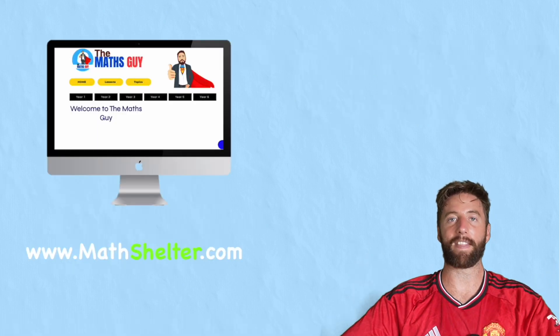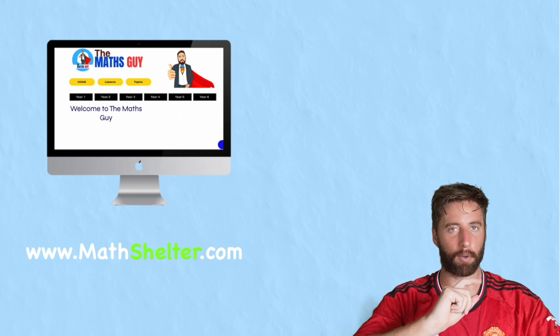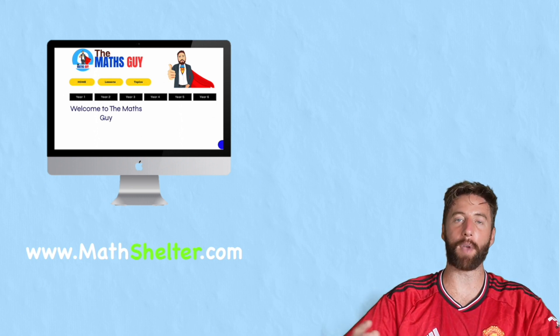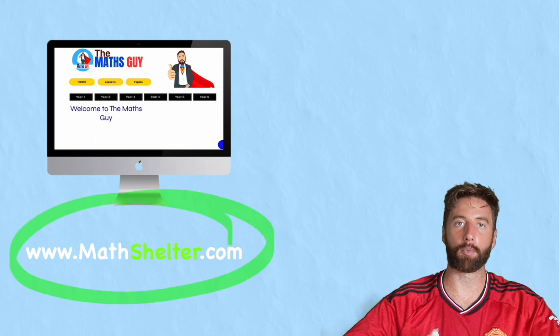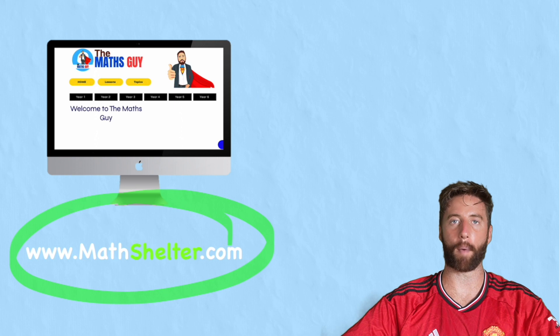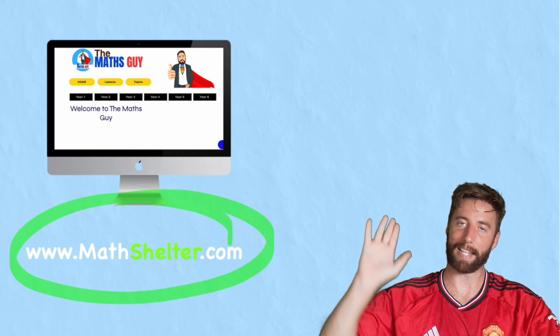And there you have it. That is how to find the area of compound shapes, including a triangle. Hopefully this video has been helpful for you. If it was, head on over to themathshelter.com, where you're going to find loads more videos covering everything you need to know about maths. But for now, guys, I'm going to see you in another video. So peace out.